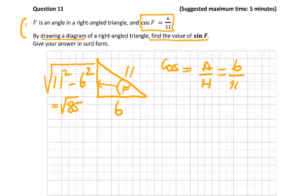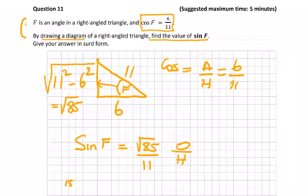And we're asked to write sine F. Your knowledge of SOHCAHTOA again - sine F, sine is equal to opposite over hypotenuse, so that would be root 85 over 11 for this question. Question 11 was worth 15 marks, nice if you know your trig.